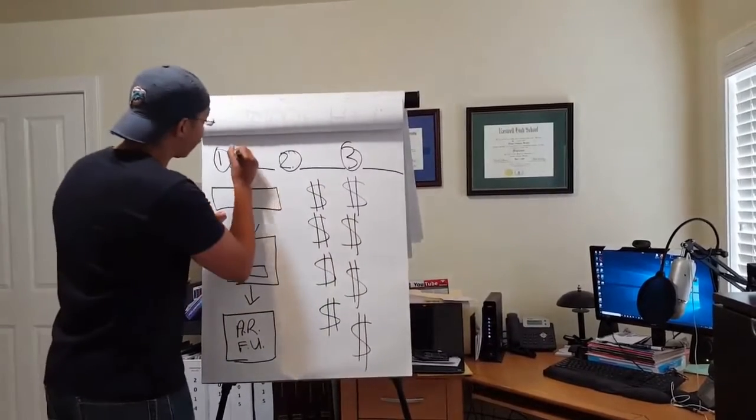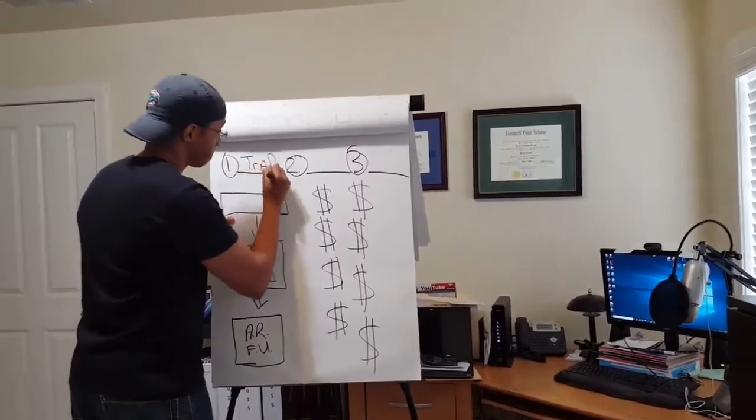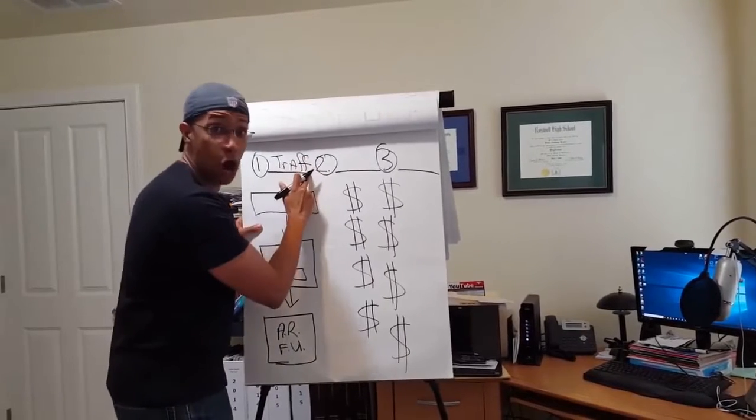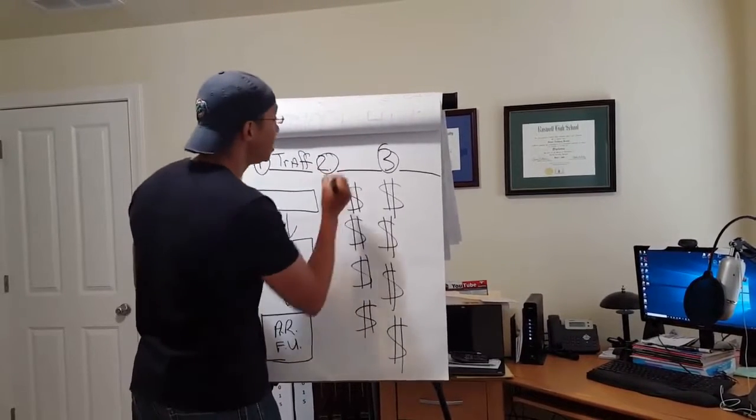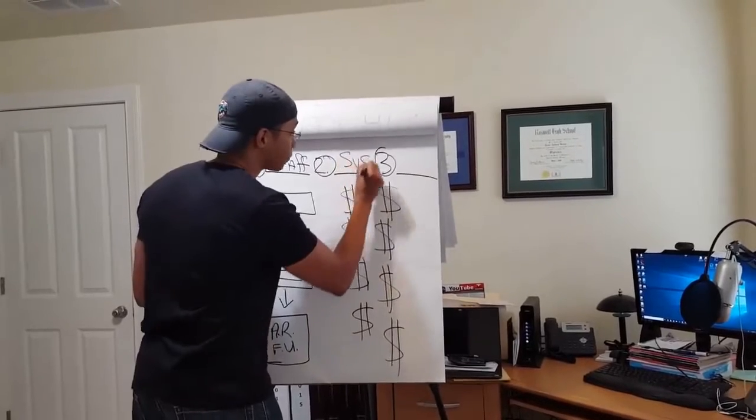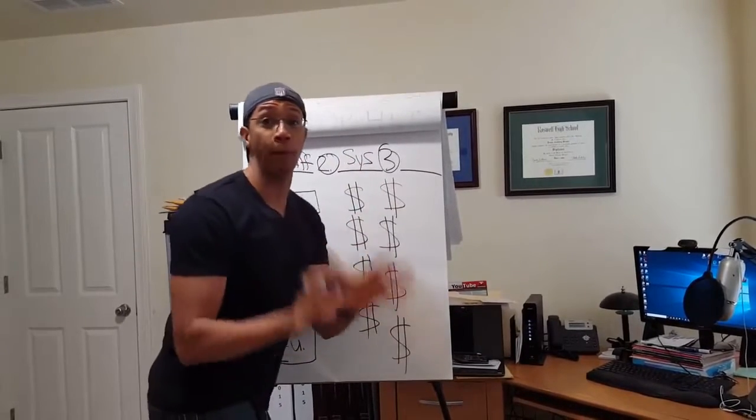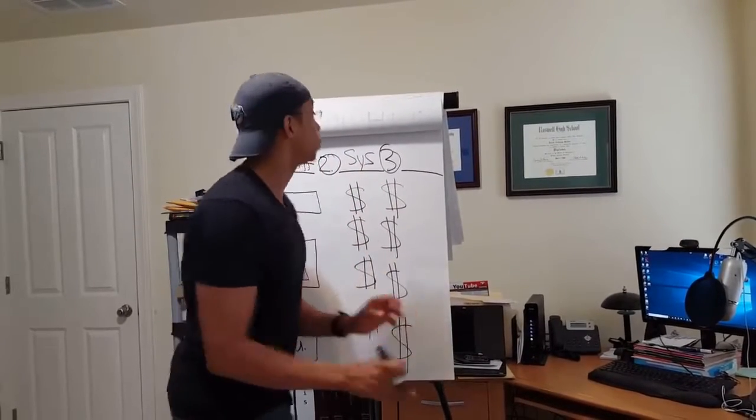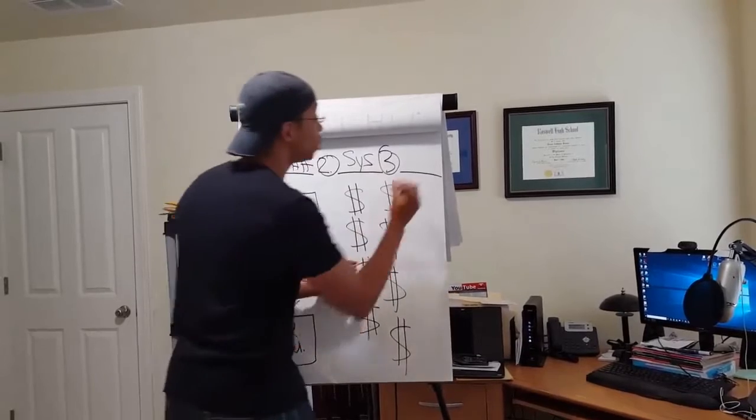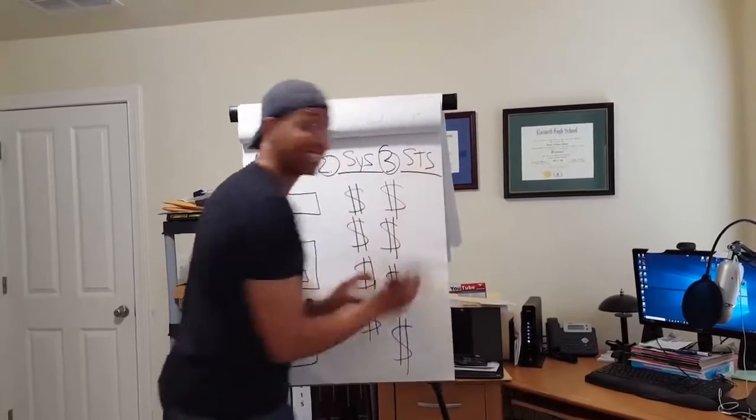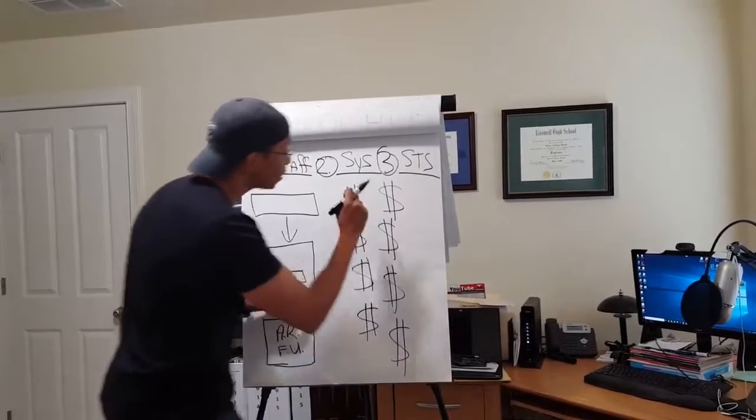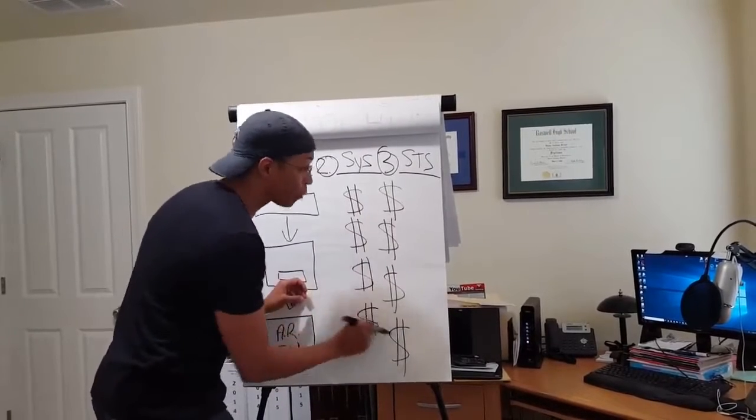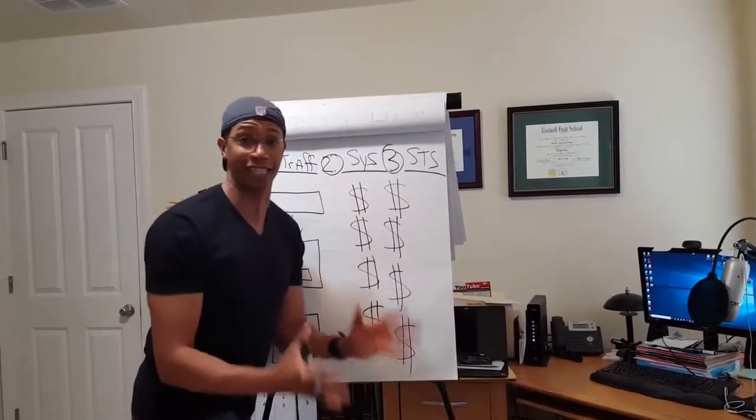The first thing you need is traffic. I'm just going to put T-R-A-F-F for traffic. The second thing that you need is a system that does the follow-up for you. And the third thing you need is S-T-S. That stands for Stuff to Sell. And that's what each of these little dollar signs are right here. Each of these is a product to sell.